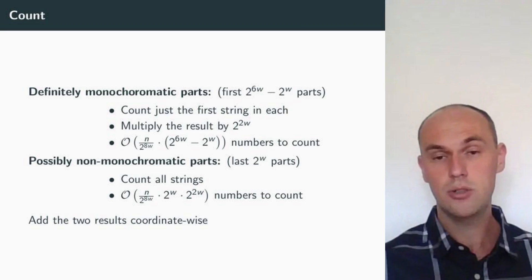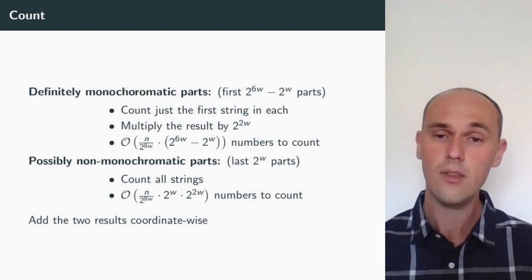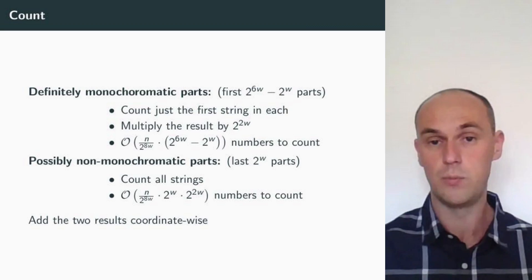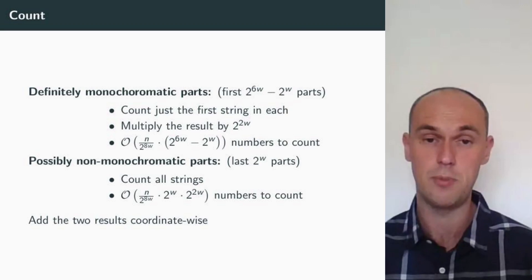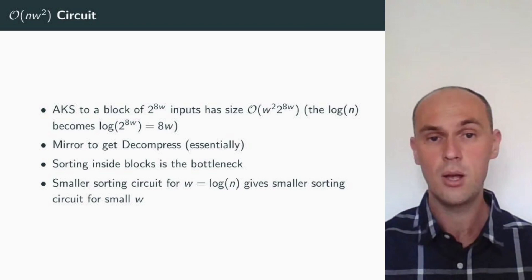How to count the possibly non-monochromatic parts? Well, that's also easy. We count all the strings because there are very few non-monochromatic parts. So, in total, we have number of blocks, n over 2 to the 8w, times the number of possibly non-monochromatic parts in each block, 2 to the w, times 2 to the 2w, which is the number of strings in each part. Finally, we add those two results coordinate-wise and we have our counting circuit.